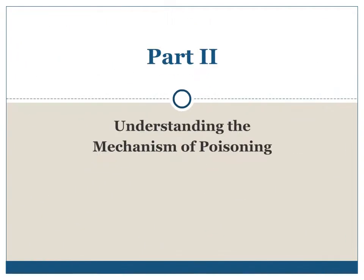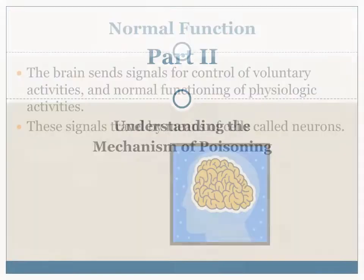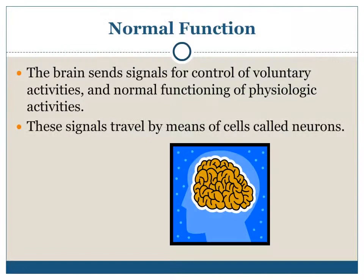Part 2: Understanding the Mechanism of Poisoning. Normal function: the brain sends signals for control of voluntary activities and normal functioning of physiologic activities. These signals travel by means of cells called neurons.